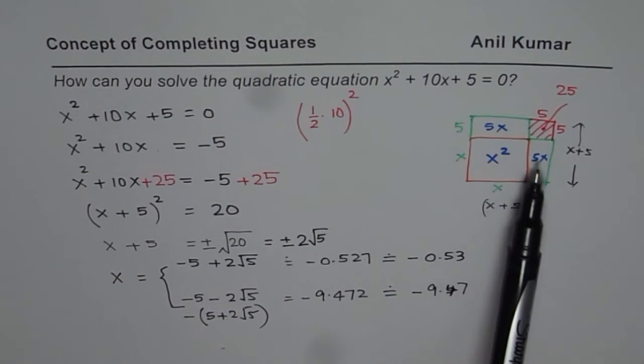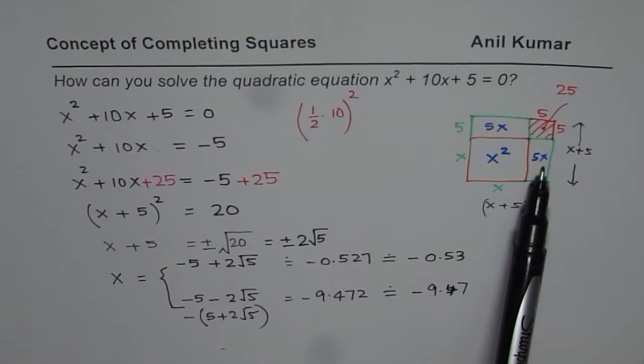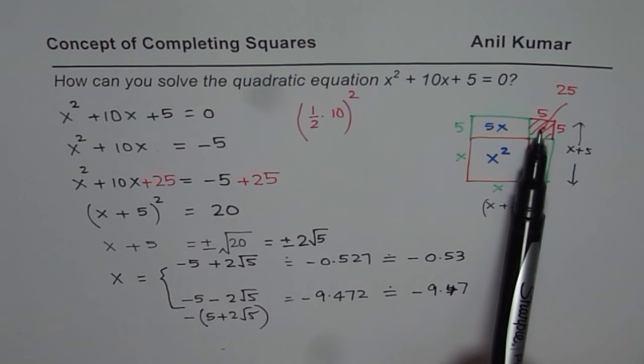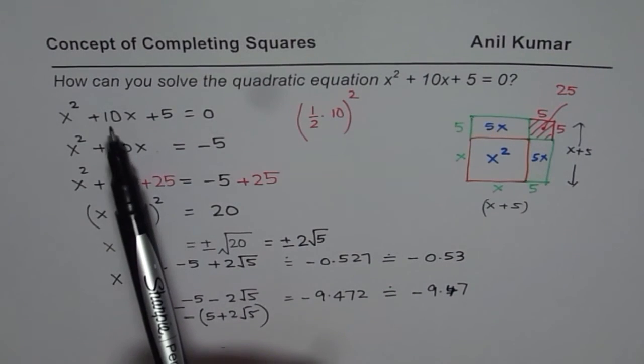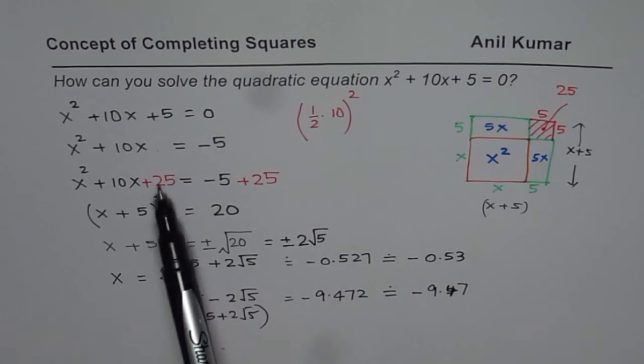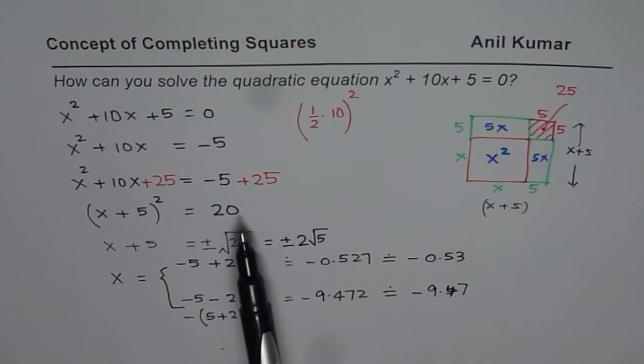Half of this is 5x, so you make two rectangles on either side. The space left will be the square of half of this coefficient. That term is added on both sides to solve. We'll take one more video on this with practice questions. I hope you understand and appreciate the whole concept. Thank you and all the best.